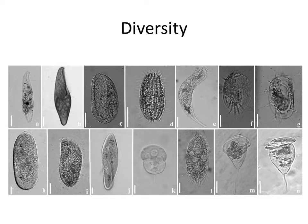There is a great diversity of species, not only in numbers but in their appearance. Here you can see, for example, the position of the cilia. Some, like the paramecium, have cilia all over their single-celled body. Some have cilia only around their mouth parts.